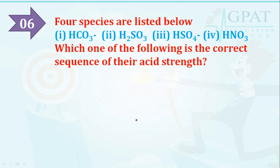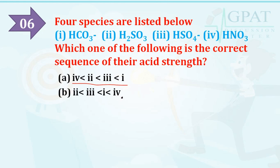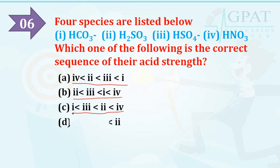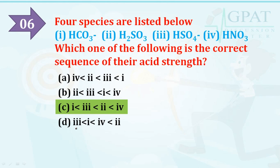Question number six: four species are listed — HCO₃⁻, S₂O₃²⁻, HSO₄⁻, and HNO₃. Which is the correct sequence of their acid strength? The options are various orderings of these four. The right option is C: HNO₃ has the most acid strength, then S₂O₃²⁻ (as H₂SO₃), then HSO₄⁻, and lastly bicarbonate (HCO₃⁻).